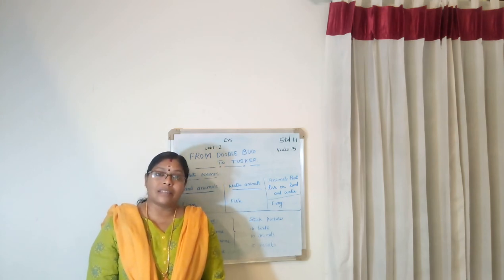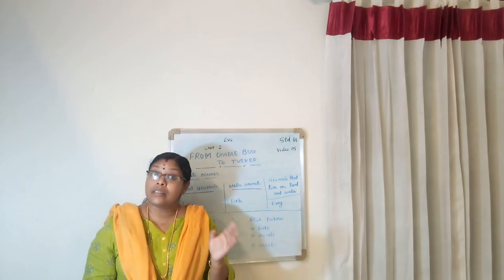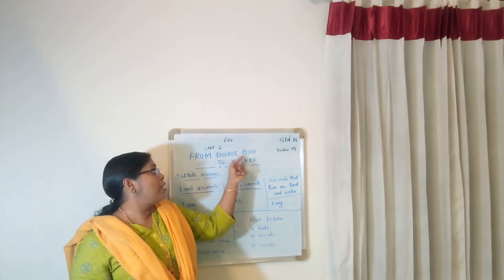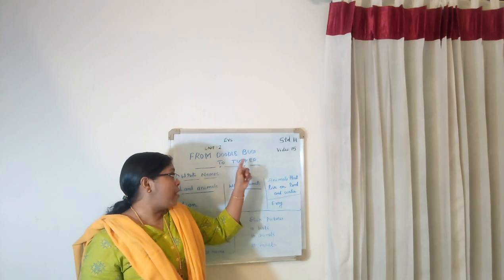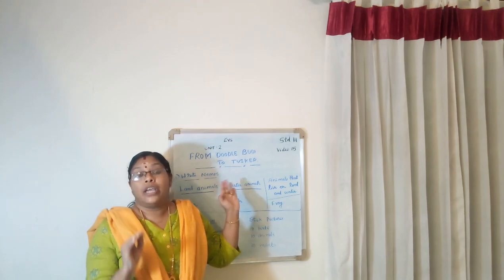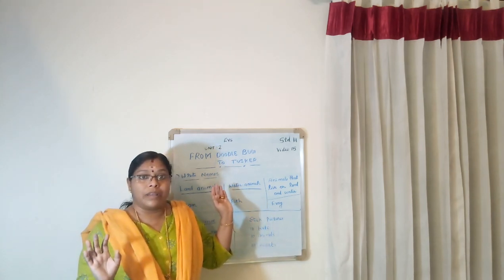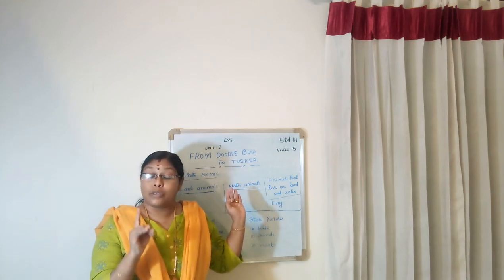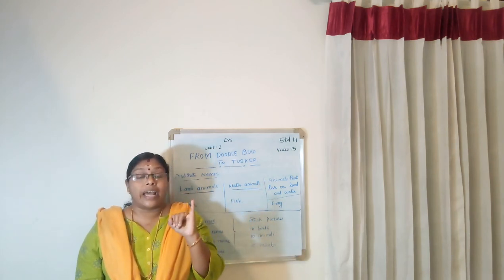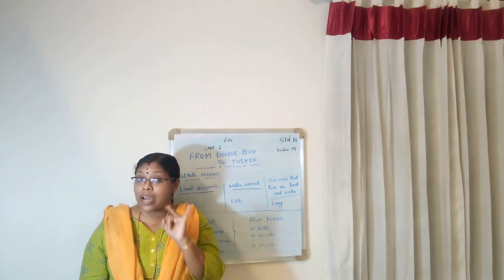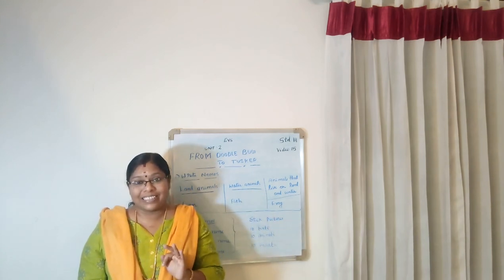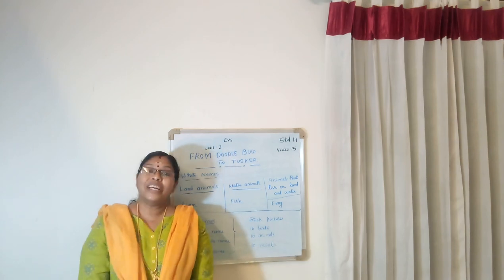Got it, my dears? Today we started Unit 2, 'From Doodlebug to Tusker.' Find out the meanings of Doodlebug and Tusker from your dictionary. If you are not getting the meaning, no problem — I will send it to you, but you try first. Do three activities: write 10 animals' names, 10 birds' names, and 10 insects' names, each with pictures. If you have any doubt, you can call me. See you in our next class.